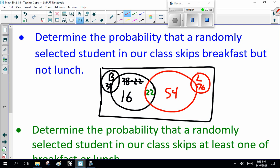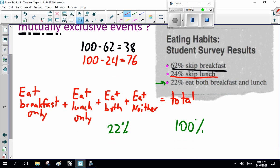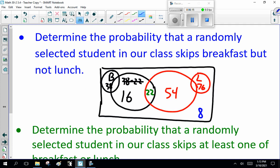So 16, 22, 54. Coming back to here, breakfast only is 16%, lunch only is 54%. How many eat neither? 16 plus 54 plus 22 is 92, so eat neither is 8%.